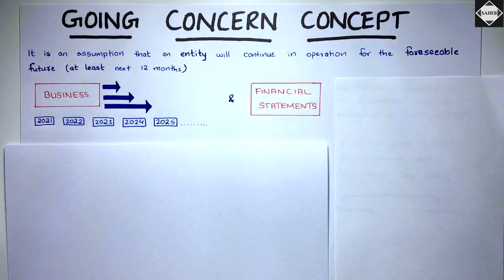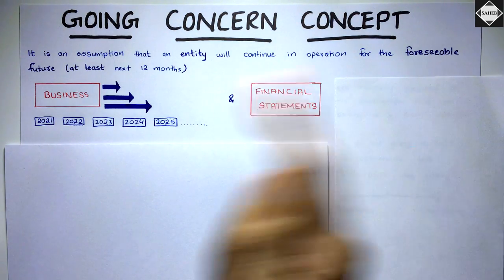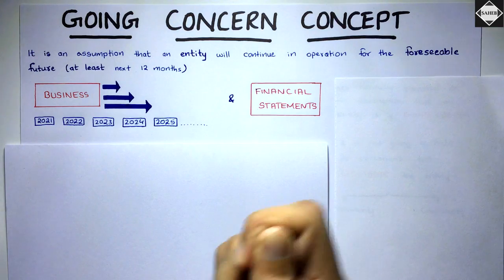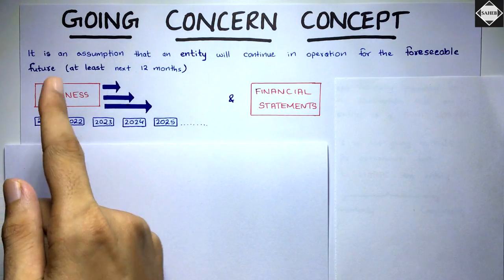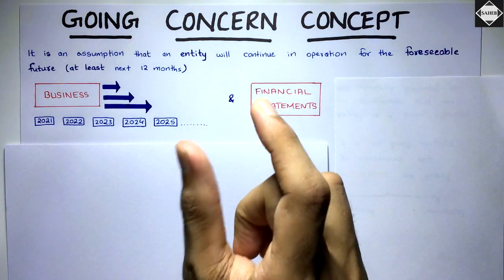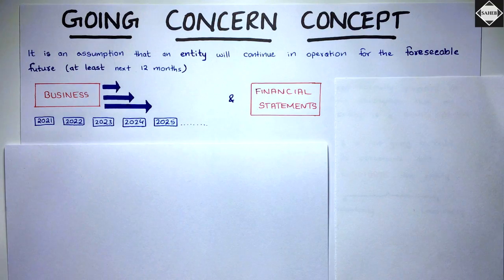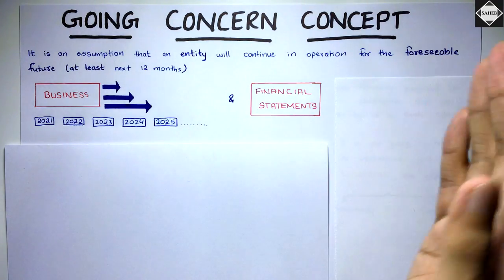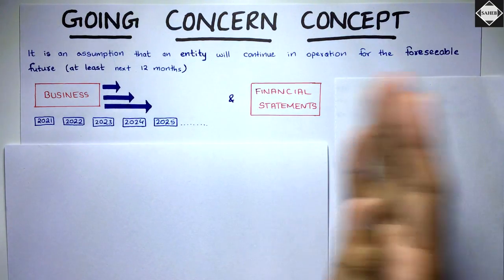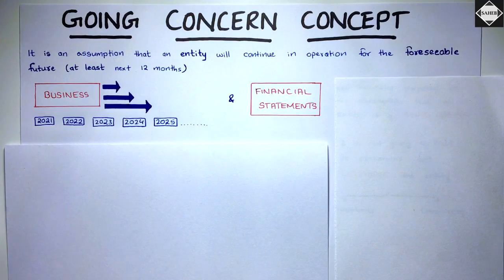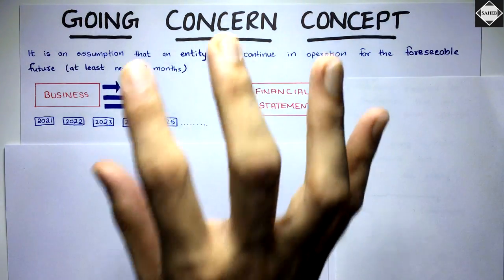What's the meaning of foreseeable future? There's no exact definition, but the interpretation is at least the next 12 months — that's the minimum. We also assume it will continue for two, three, four, five years or more.